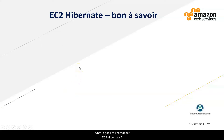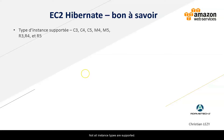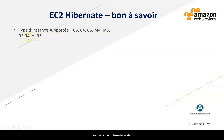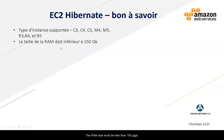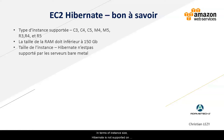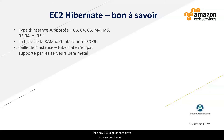What is good to know about EC2 Hibernate? Not all instance types are supported. You can't do Hibernate on T2 or T3, for example. Only C3, C5, M4, M5, R3, and R5 are supported for Hibernate mode. The RAM size must be less than 150GB. Hibernate is not supported on bare metal servers, so if you have provisioned a bare metal server, it won't work — it's not allowed.